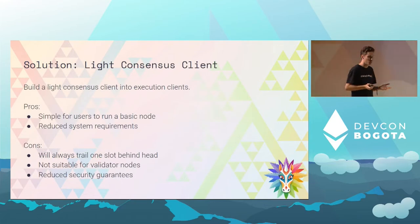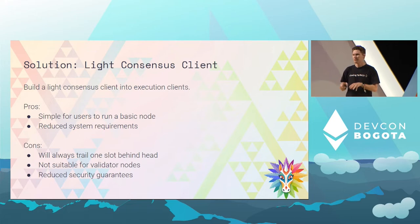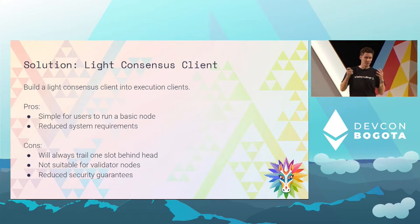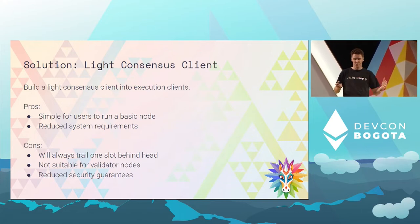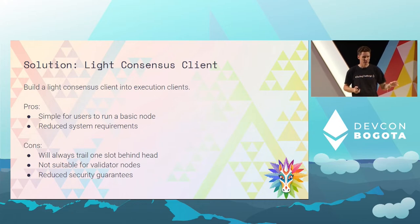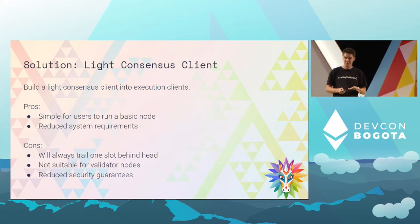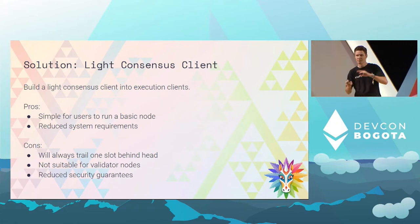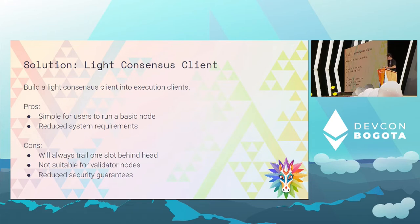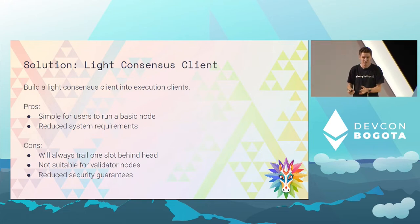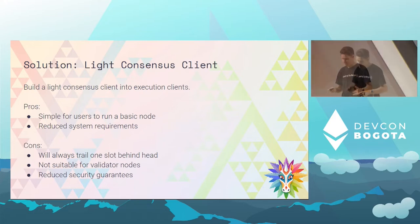There are a couple of solutions we can look at. The first is embedding a light consensus client into each execution client. I really like this idea — it's simple for users to run a node, it reduces the system requirements. Light client consensus is a lot less bandwidth and CPU than the full consensus protocol. But it does come with some trade-offs: you will always be one slot behind head because you've got to wait for the sync committee, you can't run a validator node this way, and it's a reduction in security guarantees. For most nodes — if you just want to send some transactions — it's probably a really great solution. But it's not for everyone.